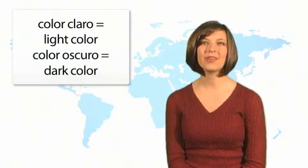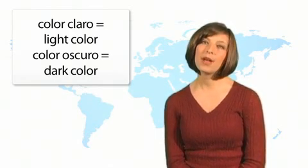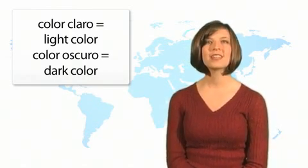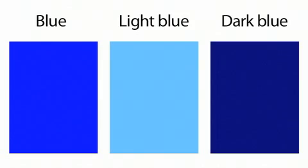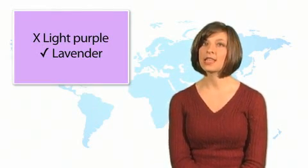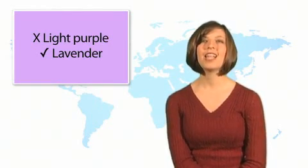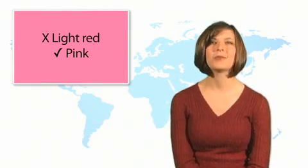Como ves, para hacer un color más claro, se pone la palabra light delante del color. Y para hacer un color más oscuro, se pone la palabra dark delante del color. Blue, light blue, dark blue. Green, light green, dark green. Hay otros que tienen nombres especiales. En lugar de light purple, se usa lavender. Y en lugar de light red, se usa pink.